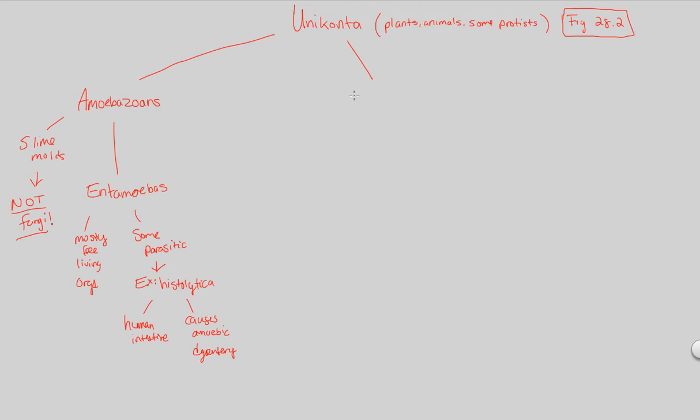Last one in the unikonts. Last thing to remember about this lecture is the following: the opisthokonts. These are animals, fungi, and some protists. So I'm going to write this down. Animals, fungi, some protists. So, of course, we have to cover it because we're talking about protists in this lecture.